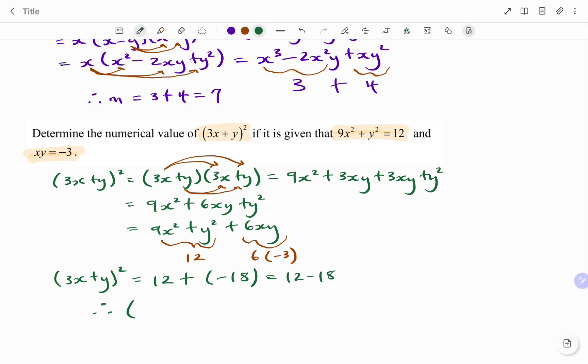Therefore, the expression 3x plus y all squared is equal to negative 6. Thanks for watching. Bye!